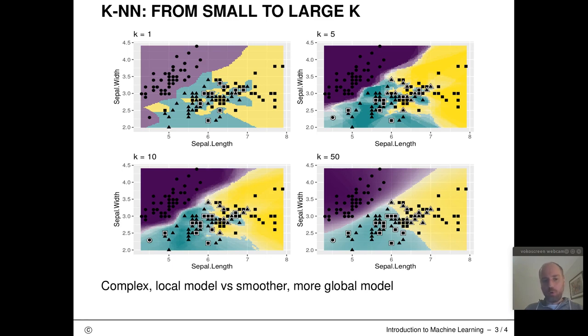And what you can see here is that the smaller I set k for my KNN classifier, the more complex, wiggly, and rough my decision boundaries are and the more I can actually model quite local structures. And the larger I make k, the more global my model becomes, the smoother these decision boundaries become.